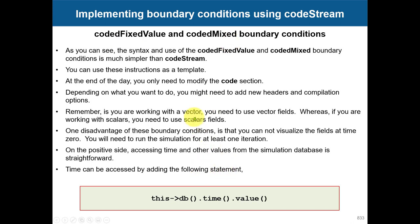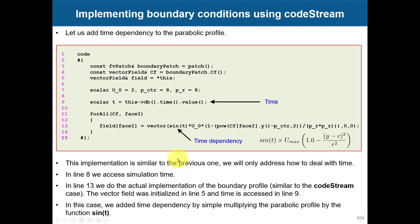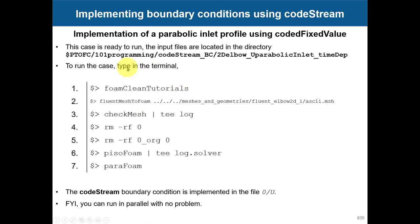I will show you two cases and in particular the advantage that you can access time. To program using codeFixedValue or codeMixed, you have a template. You put it in your boundary conditions and that's all. You declare scalars, access time like this, and then program your boundary condition. Cell center and face center information is automatically computed — all coordinates are already available. It's much simpler notation.